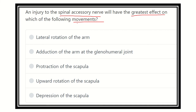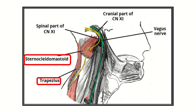The options are: lateral rotation of the arm, adduction of the arm at the glenohumeral joint, protraction of the scapula, upward rotation of the scapula, and depression of the scapula. Now, the spinal accessory nerve —